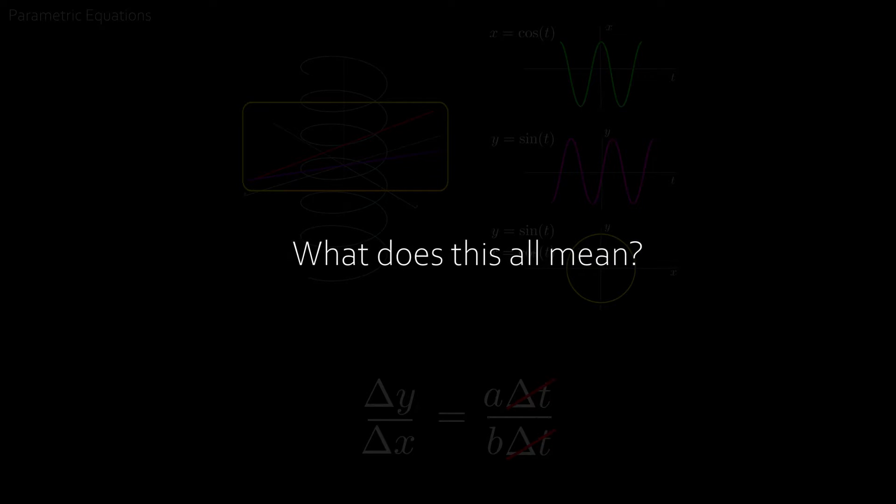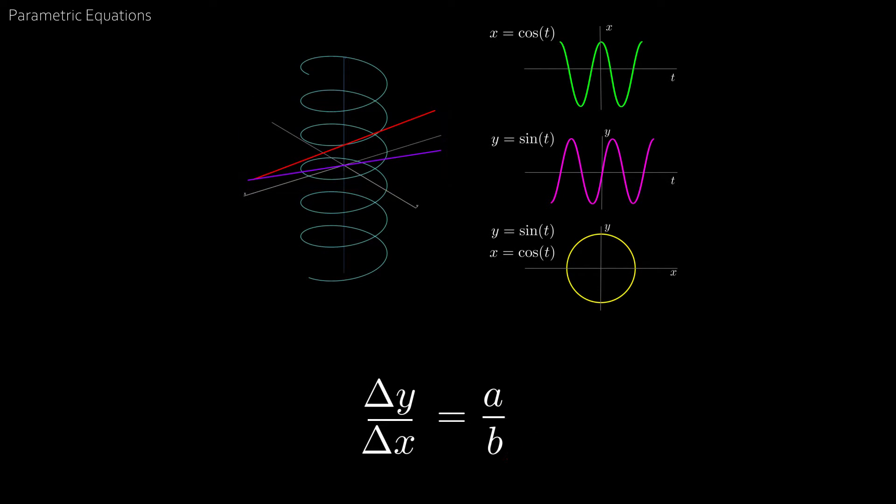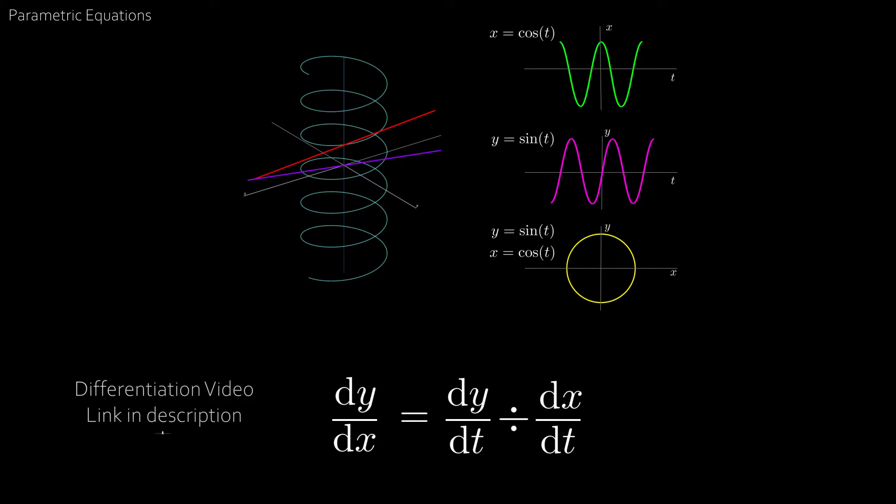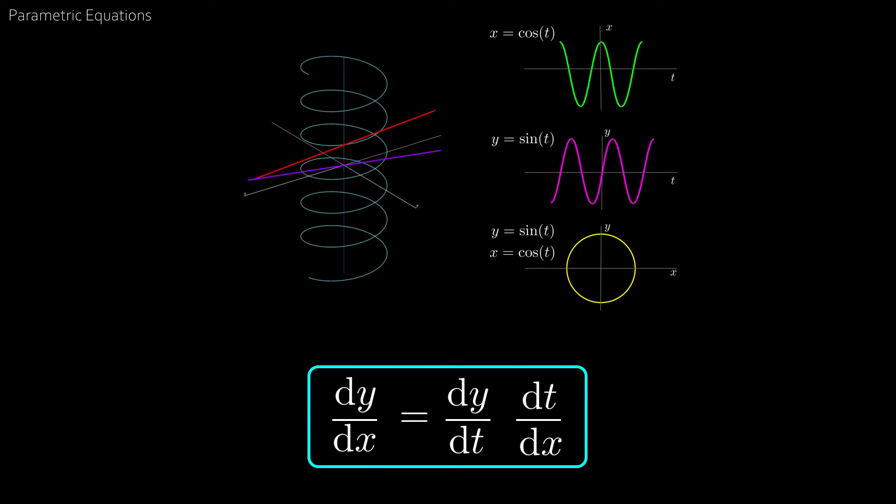Okay, great, but what does this all mean? Well, we have a over b, or a divided by b. We recall that a is delta y over delta t and b is delta x over delta t. Taking the limits of both sides allows us to convert our deltas into d's. If this step is not familiar, check out our differentiation video linked in the description. Now dividing by dy by dx by dt is the same as multiplying by dt by dx. This is our parametric formula for dy by dx.